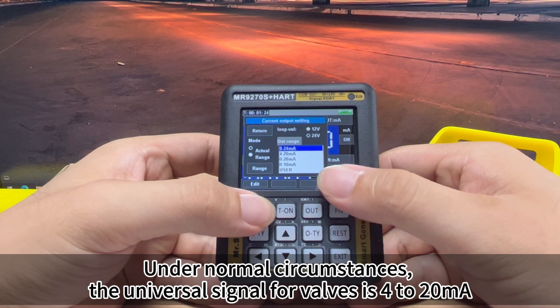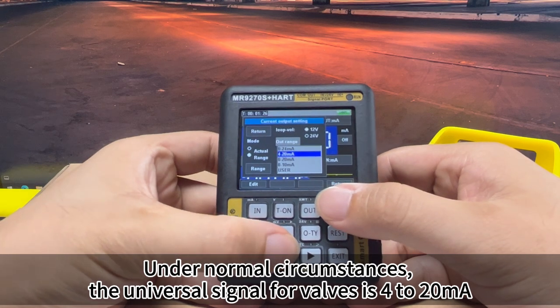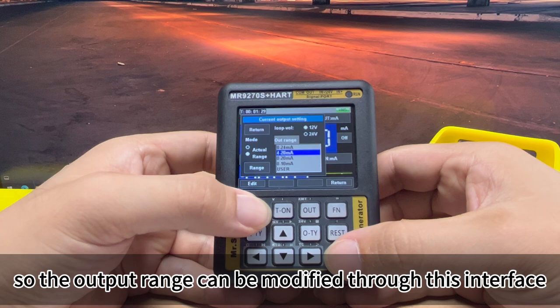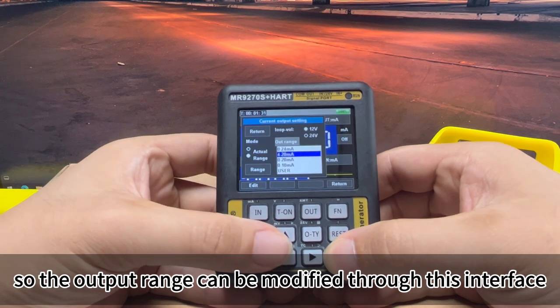Under normal circumstances, the universal signal for valves is 4 to 20 milliampere, so the output range can be modified through this interface.